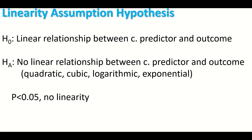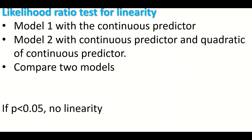The null hypothesis states that there is a linear relationship between the continuous predictor and the outcome. The alternative hypothesis states that there is no linear relationship, meaning the relationship might be quadratic, cubic, logarithmic, or exponential. A p-value is then generated, and based on that p-value, the assumption is determined to be fulfilled or not.